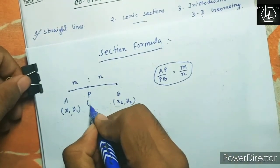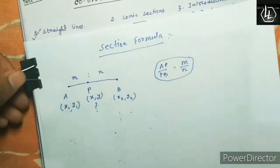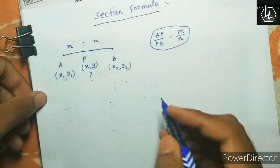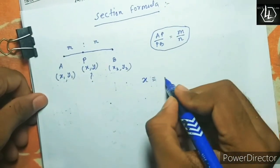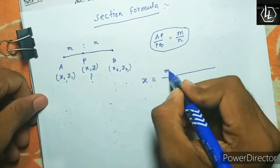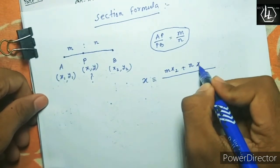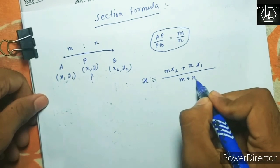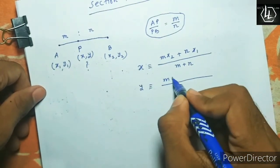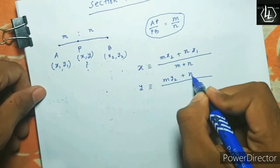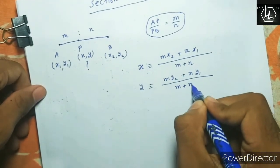You are asked to find the coordinates of P, that is x comma y. The formula for x is: x equals M times x2 plus N times x1, divided by M plus N. And y will be: y equals M times y2 plus N times y1, divided by M plus N.